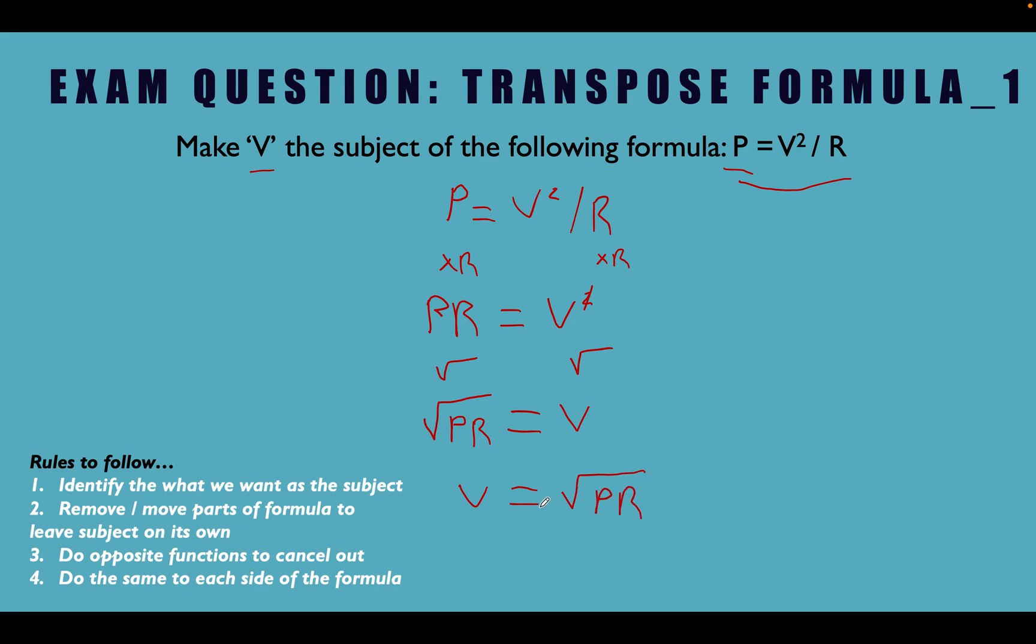And there's our answer. V equals the square root of P times R. So let's recap on that quickly. We started with P equals V squared divided by R. We decided we wanted to remove part of the formula to leave the subject on its own. So what we need to do is remove these parts by doing the opposite functions, which is step three. Opposite of dividing by R is multiply by R. So we do the same to both sides, which is step number four there.